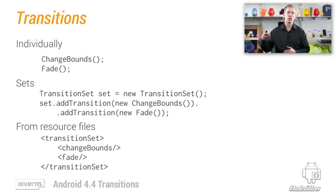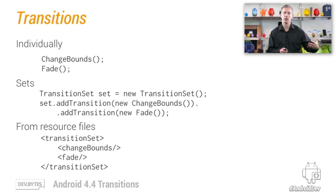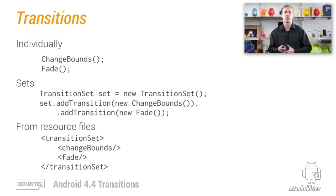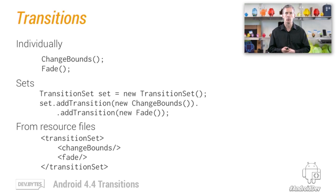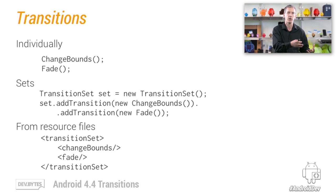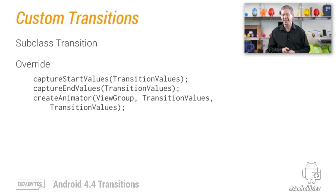You can also load transitions from resource files. This example is a transition set that gets loaded with two children automatically added to it, to listen for changes in visibility as well as size and location. The resource file approach may not be something you want to do from code when it's easy enough to create these things on the fly, but it is the mechanism used by TransitionManager when it inflates a graph of information.